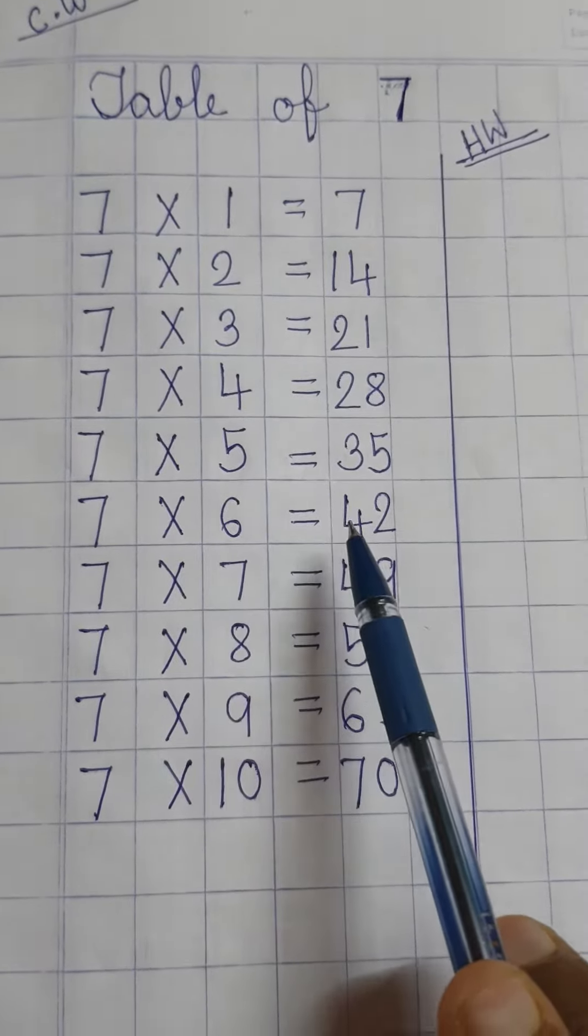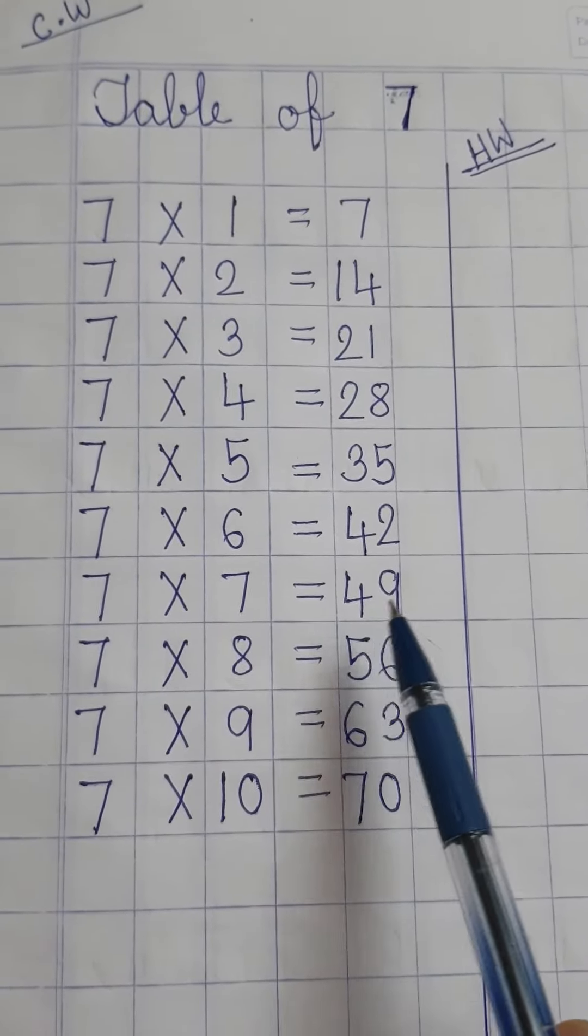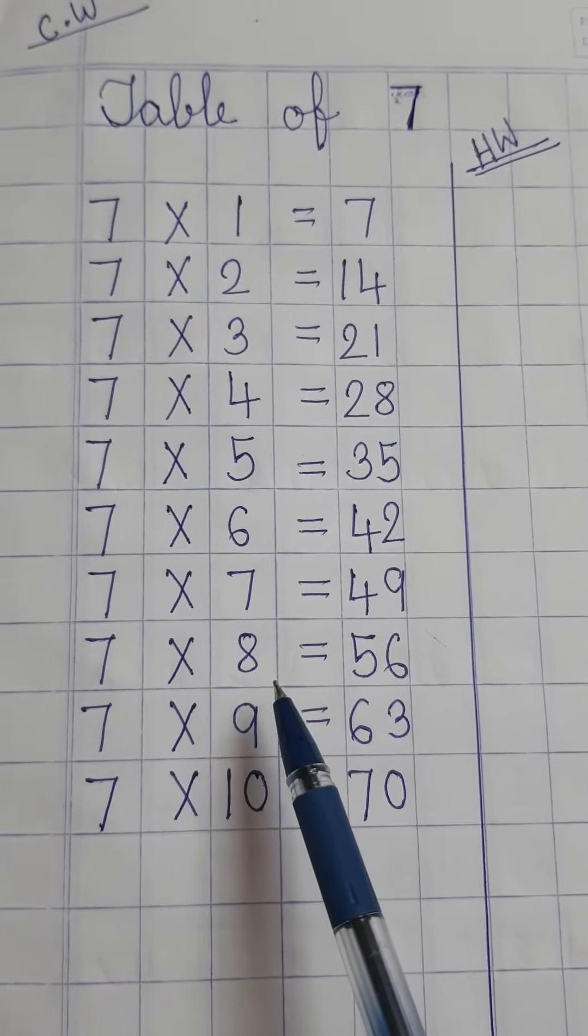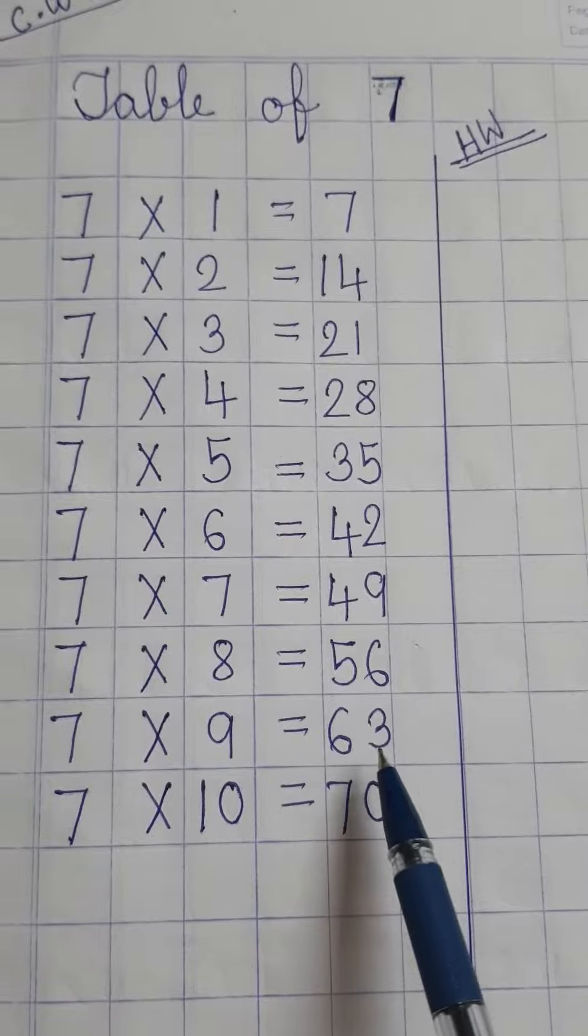7 × 6 = 42, 7 × 7 = 49, 7 × 8 = 56, 7 × 9 = 63.